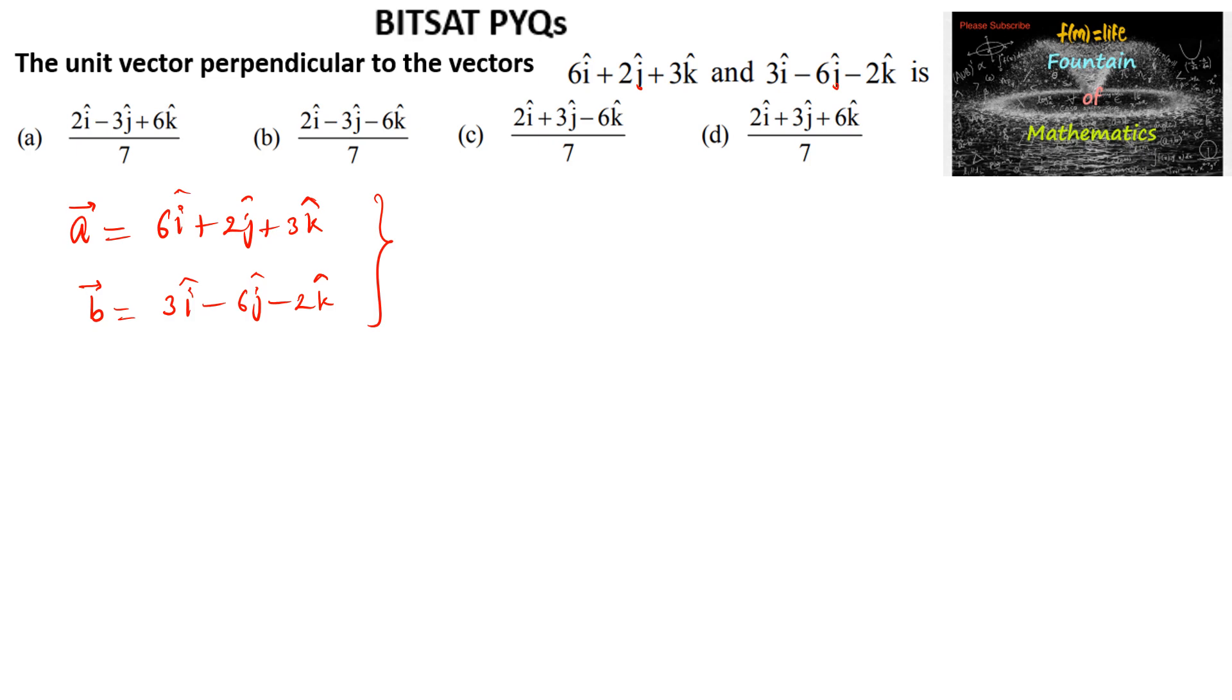And we know that a vector which is perpendicular to these both vectors can be parallel to a cross b. So let us find a cross b. We can write i, j and k in the first row and vector a coefficients 6, 2 and 3. And vector b coefficients we can write 3, minus 6 and minus 2.